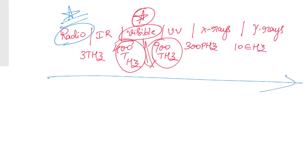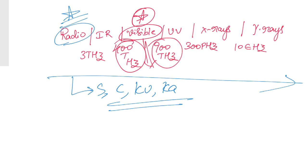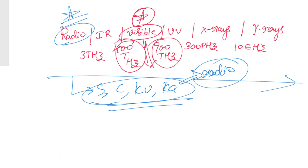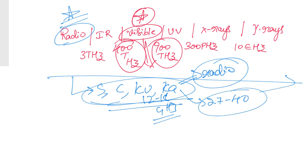When talking about various frequency bands, we refer to bands like the S-band, C-band, Ku-band, and Ka-band. These are nothing but frequency ranges within radio waves at which a particular satellite functions. For example, the Ku-band functions between 12 to 18 GHz, and the Ka-band functions between 27 to 40 GHz.